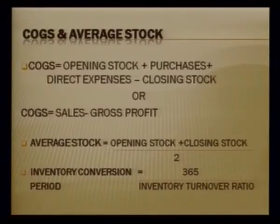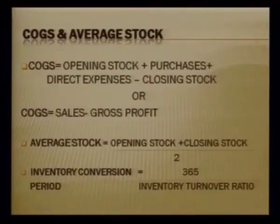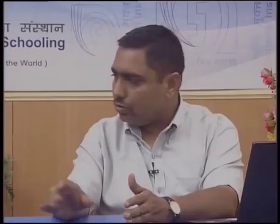Average stock means opening stock plus closing stock divided by two. If only closing stock is given in the question, then that closing stock itself becomes the average stock — we do not divide by two. It depends on what information is available. The standard format requires both opening and closing stock.